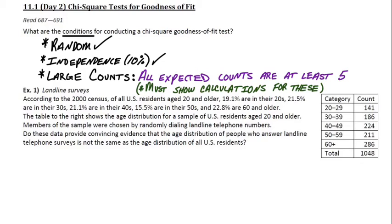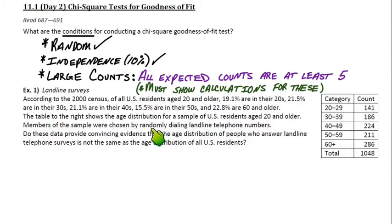Example one is about landline surveys. According to the 2000 census of all U.S. residents aged 20 and older: 19.1% are in their 20s, 21.5% are in their 30s, 21.1% are in their 40s, 15.5% are in their 50s, and 22.8% are 60 and older. That's the distribution of ages from the 2000 census, representing all U.S. residents.